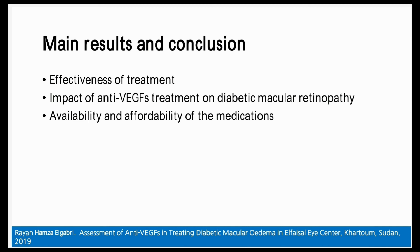The multinomial regression model revealed that glycemia control, duration of treatment time, and frequency of injection use are the most contributing factors to the effectiveness of anti-VEGF medications. When assessing accessibility, we found that the availability of these medications is fluctuating in the Sudanese market, and the majority of the population cannot afford either of them.